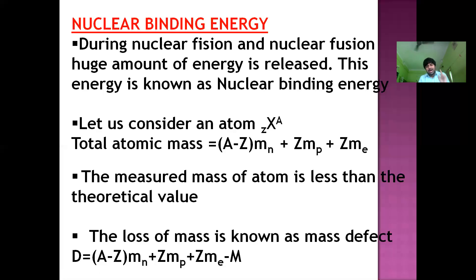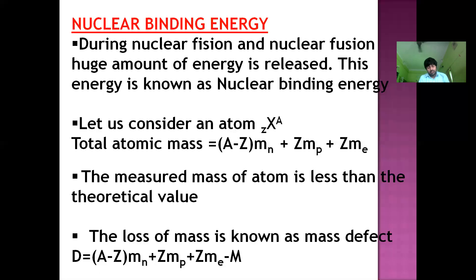The actual mass is much less than the theoretical mass. So we subtract the actual mass from the theoretical mass. This difference is known as the mass defect.